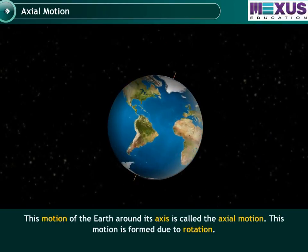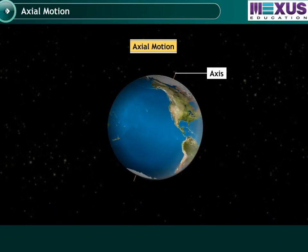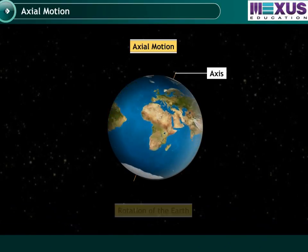The motion of the Earth around its axis is called axial motion. This motion is formed due to rotation.